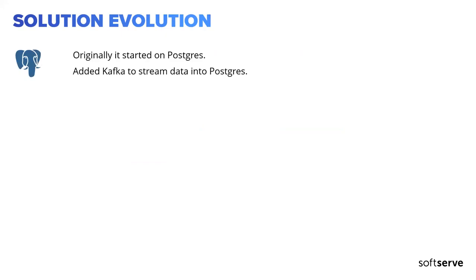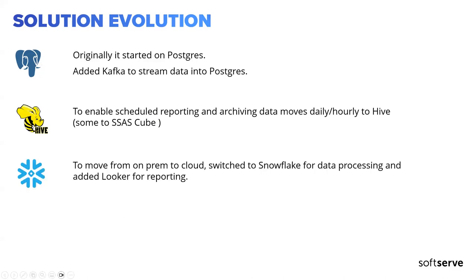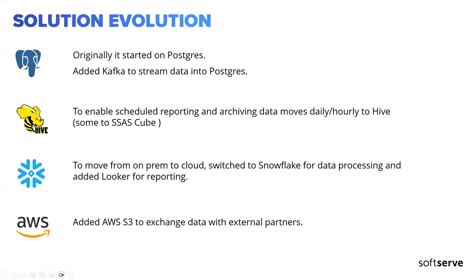The solution originally started on Postgres back in the early 2000s. To enable scheduled reporting and data archiving, we send it to Hive daily or hourly. Some data gets sent to an SSAS cube for analytics. We are now working on migrating from Hive to Snowflake with Looker for reporting, because the client wants to switch from on-prem to cloud, and this migration is one of the first steps we need to take. Data exchange with partners is performed mostly via AWS S3.